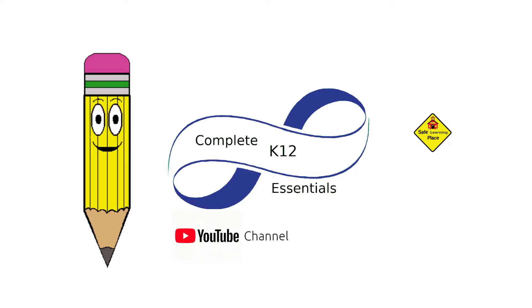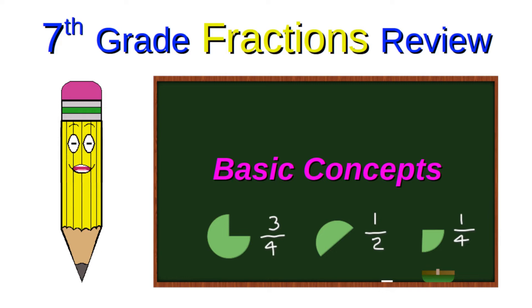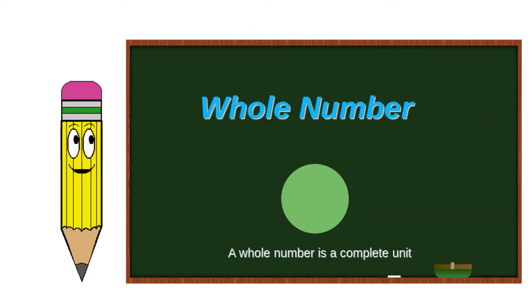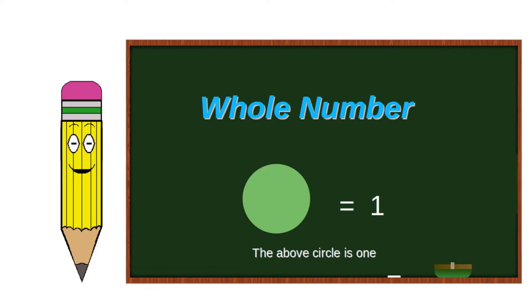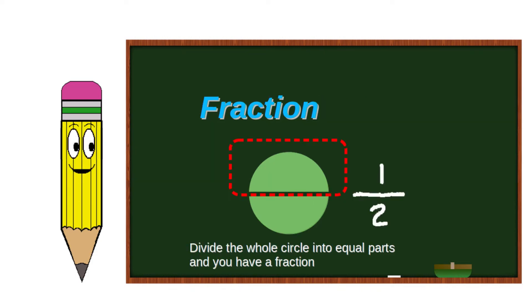Welcome to Complete K-12 Essentials, 7th Grade Fractions Review: Basic Concepts. A whole number is a complete unit. The above circle is 1. Divide the whole circle into equal parts and you have a fraction.